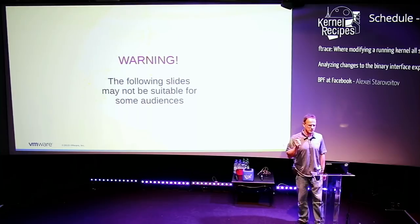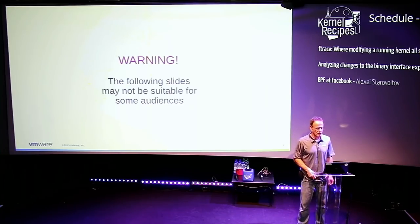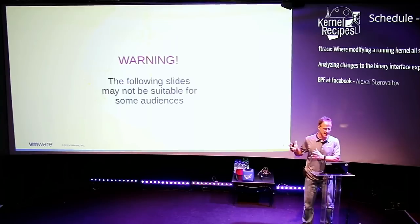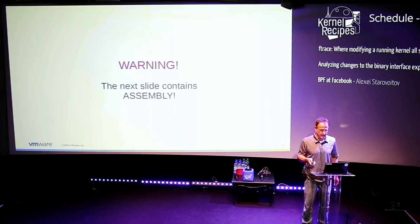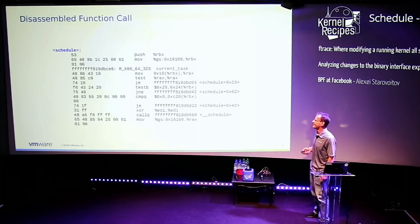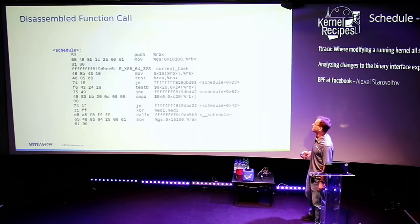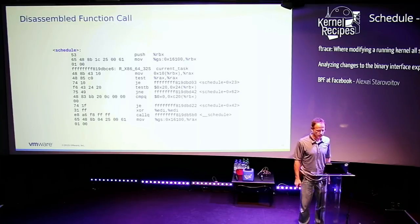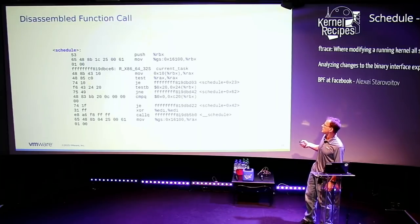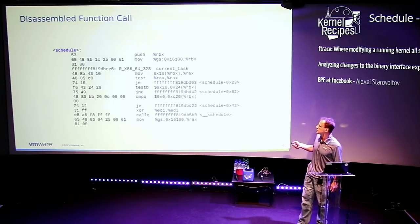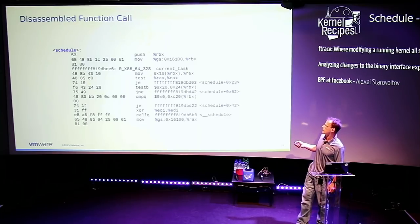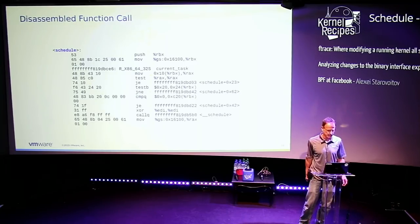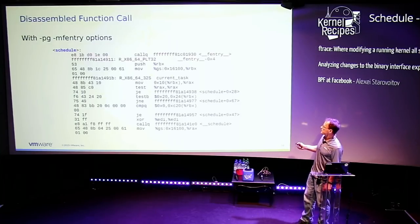When I gave this talk in 2014, someone said that was shocking. So I now have a warning: the following slides may not be suitable for all audiences — they contain assembly and machine code. When you disassemble the schedule function using objdump, you see the actual instructions. When you add -mfentry, the code is pretty much exactly the same, but it adds this 'call fentry' at every function entry.